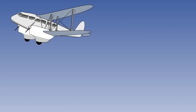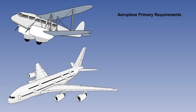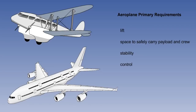In this first lesson, we will look at the primary requirements of all aeroplanes and introduce the four forces acting on an aeroplane in flight. From some of the very first aeroplanes to today, the primary requirements of an aeroplane have remained the same. These are a force — lift — which enables the aeroplane to fly in the air; a safe and protective space in which to carry the payload and crew; stability, enabling the aeroplane to naturally continue in the same direction; control, to change the aeroplane's direction and position in the air; and a force — thrust — which can propel the aeroplane forwards for the required length of time. These are therefore the five primary requirements that must be met by all powered aeroplanes.